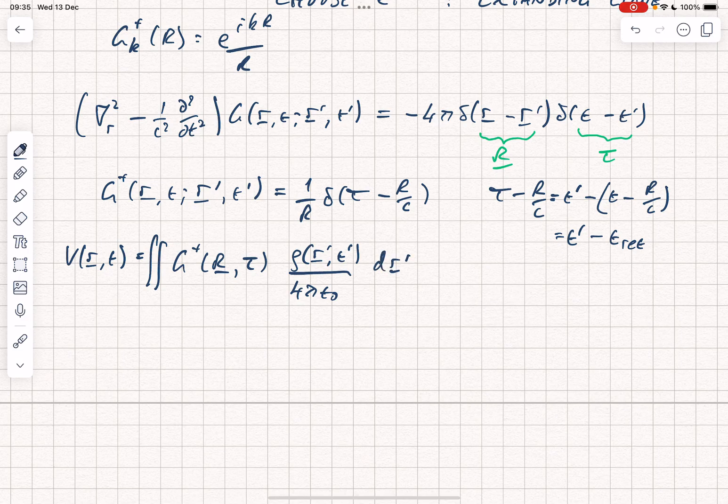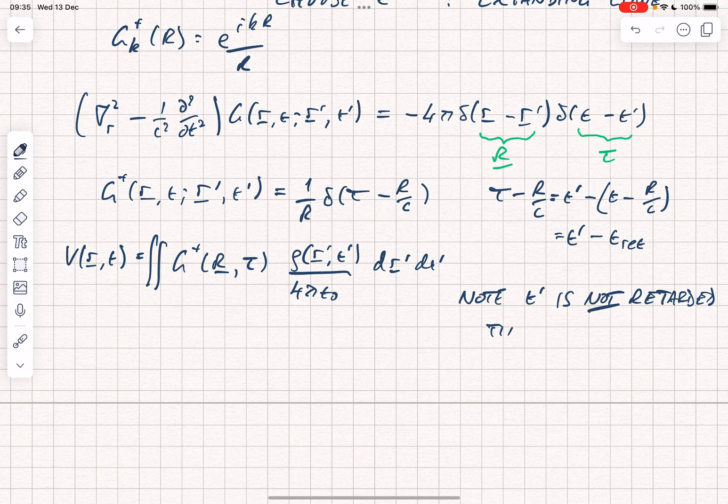It's important to note that in other videos I've used r prime to mean the retarded time, and that's not true here. t prime here is not the retarded time. It's just a second time that we're using in the Green's function. I've notated the retarded time as t ret.